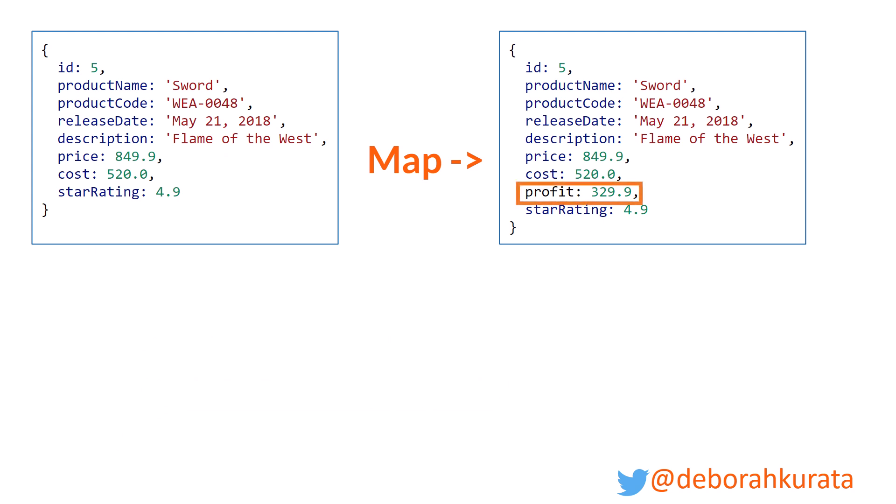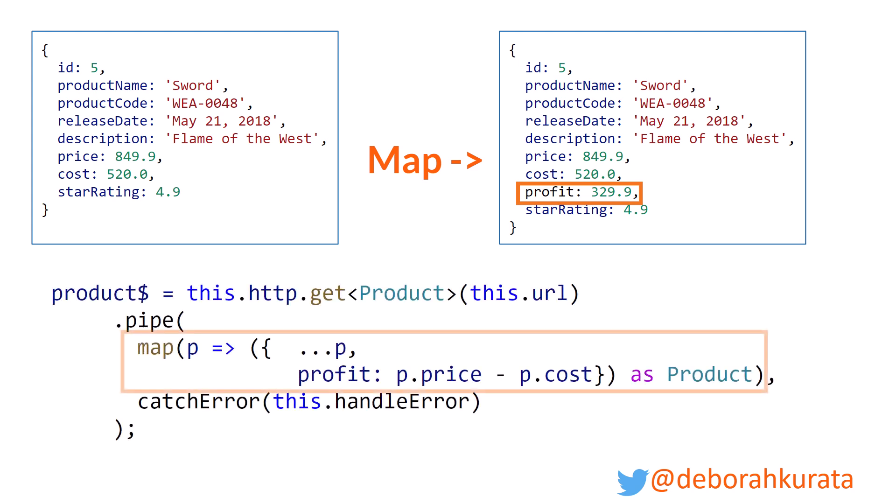Another example of map: say we're using an HTTP GET request to get one single product and we want to add a property to that product. We can use map for that as well. We're getting the data with an HTTP GET and then we're mapping our product into a copy of the product using the spread operator and then adding the additional property. We make a copy of it to ensure that our original product remains immutable, and then we use 'as product' to ensure that what comes out of our stream is an observable product.